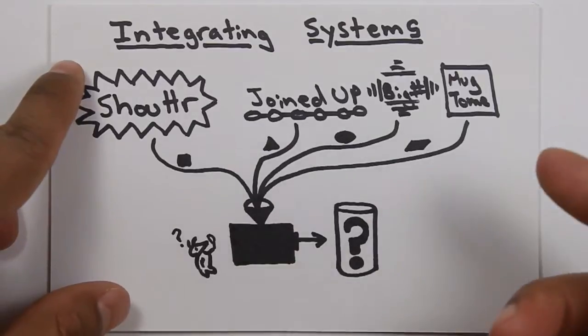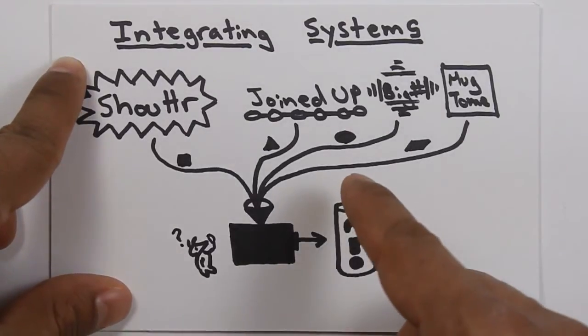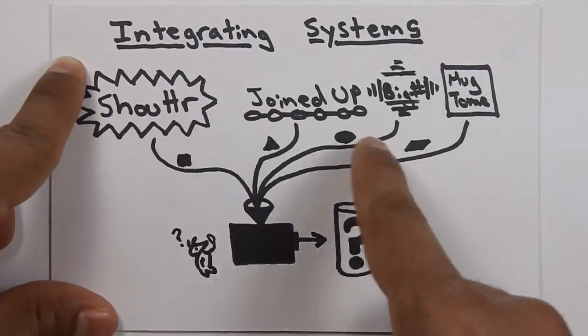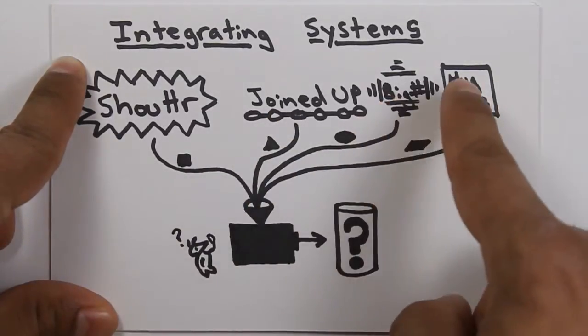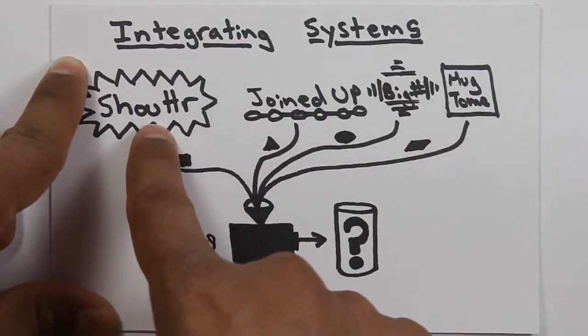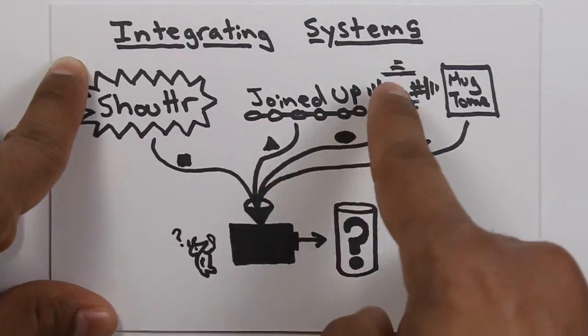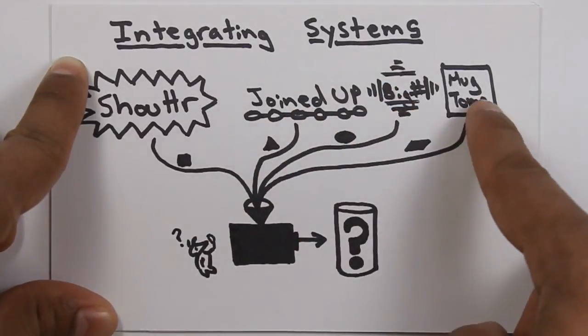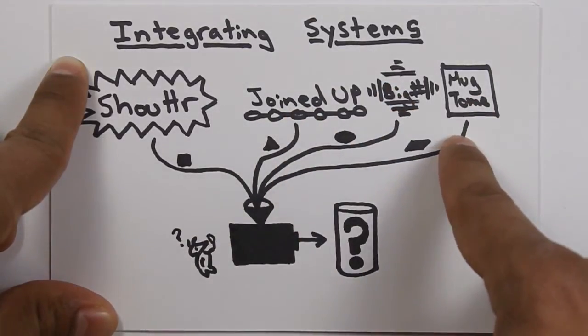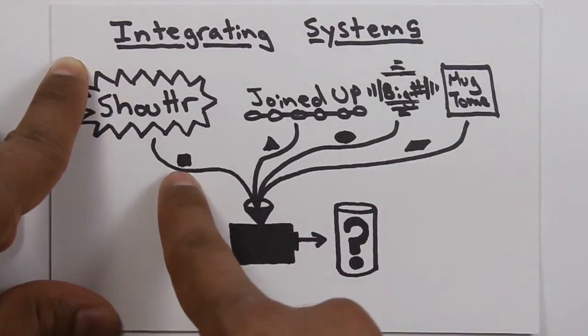Now, let's see why expansion and compaction are so important when you're working with data from the real world. Let's say that we've got a couple of social media sites, and each one of them has messages that it creates. We've got Shouter, we've got JoinedUp, we've got BigHash and Mugtome, and each one of them has a different type of message, but they're all basically the same thing. It's somebody saying something on the web.